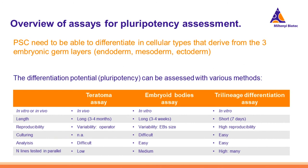Classically, pluripotency has been tested in vivo using the teratoma assay. Teratomas are distinct tumors made up of several different types of tissue. In the assay, putative pluripotent stem cells are implanted into an immunocompromised mouse, where they proliferate and differentiate to form a teratoma if they are truly pluripotent. Nevertheless, this method is long, requires ethical approval, and is not well suited for routine assessment of your cultures.